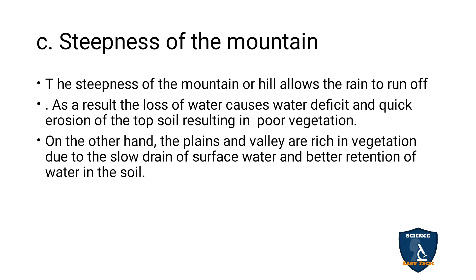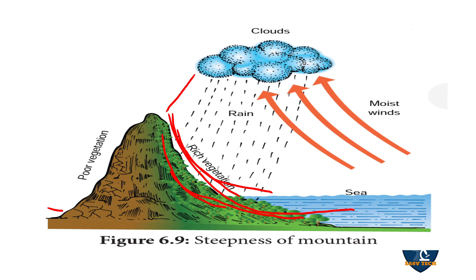On the other hand, plains and valleys are rich in vegetation due to the slow drainage of surface water and better retention of water in the soil. Plains and valleys receive more rainfall and experience no soil erosion or flooding because of the absence of steepiness, so vegetation is more abundant here.